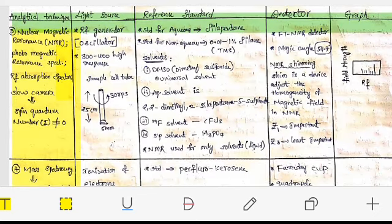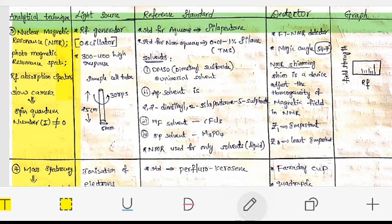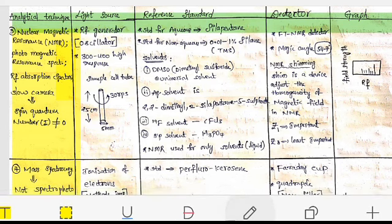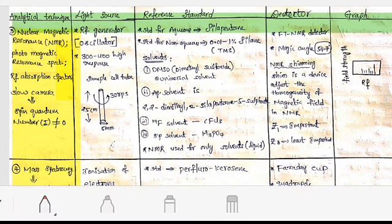Let us discuss NMR spectroscopy - Nuclear Magnetic Resonance. It is proton magnetic resonance spectroscopy because we are determining the hydrogens, which are protons. It is also called RF absorption spectroscopy because we are using radio waves. NMR spectroscopy is also called slow camera, very important for GPAT. The condition is spin quantum number should not be zero; if it is zero, the NMR spectra won't work.